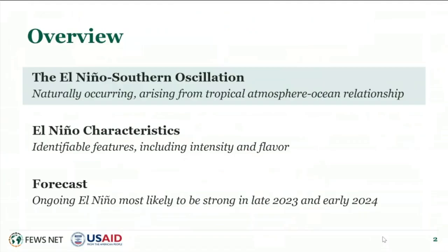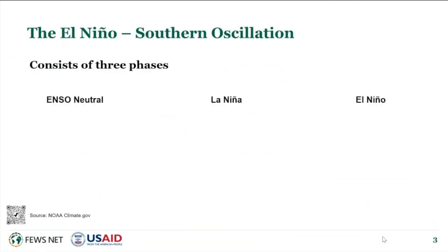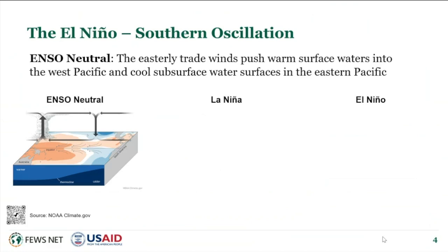A little science lesson up front: El Niño is a naturally occurring phenomenon in the equatorial Pacific Ocean involving both the ocean and the atmosphere. You'll often hear people talk about El Niño but also ENSO, which is an acronym for El Niño Southern Oscillation. El Niño refers to the oceanic part of the phenomenon in terms of sea surface temperatures, and the Southern Oscillation refers to the atmospheric part. There are three phases of ENSO that we refer to.